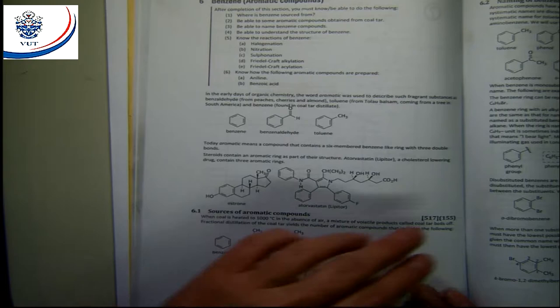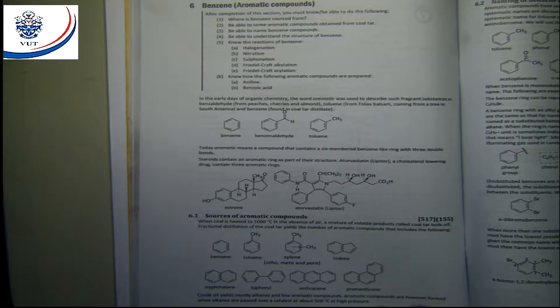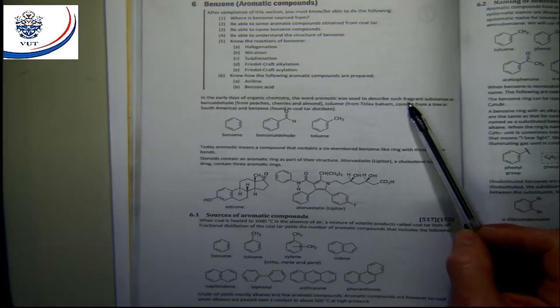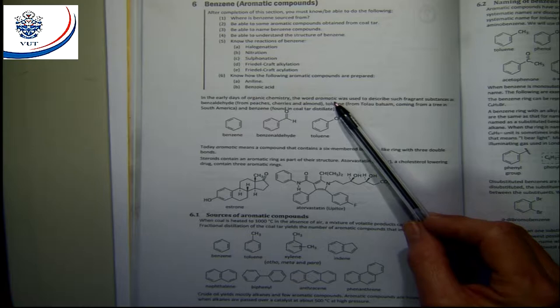Benzene, or the aromatic compounds as people referred to them earlier. The word aromatic sounds like aroma, coming from fragrances. People earlier referred to these compounds that way because of the fragrances associated with things like benzaldehyde, found in peaches, cherries, and almond.